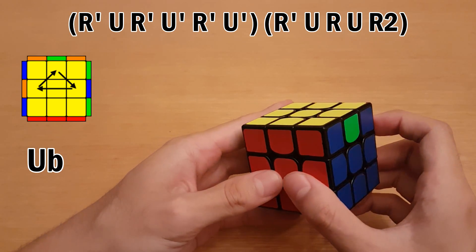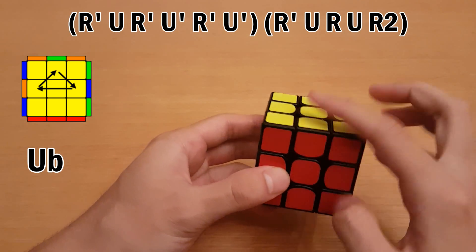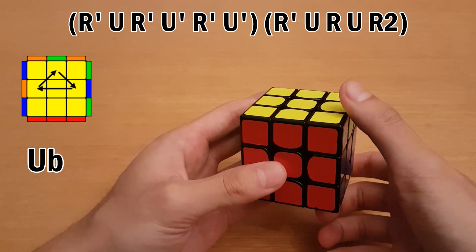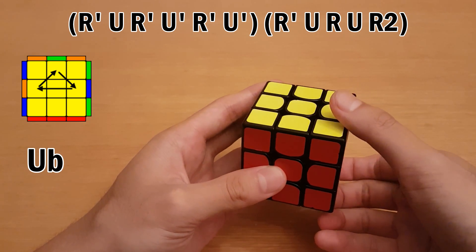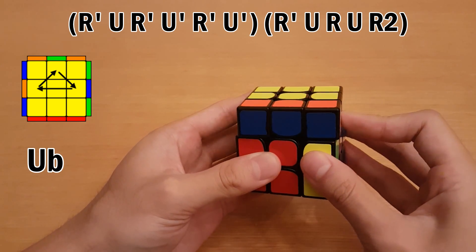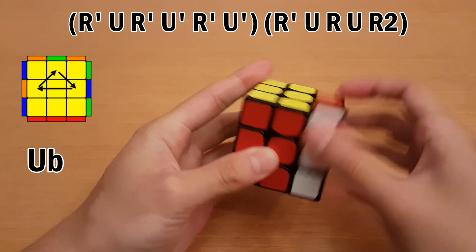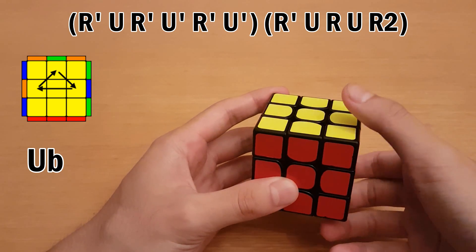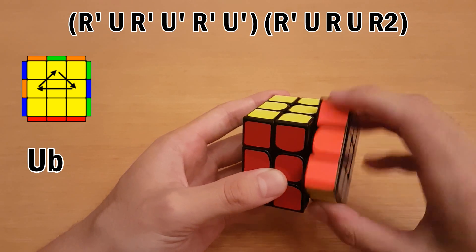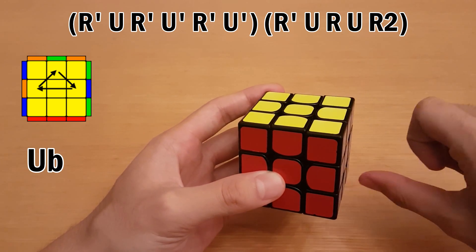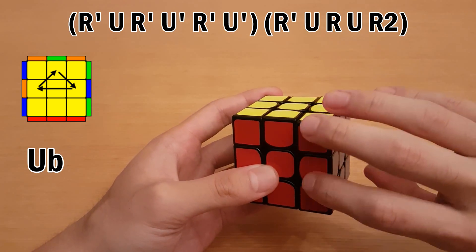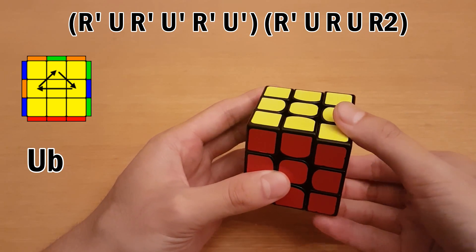Now we have U-b permutation with a block at the front. So this one goes like this. Watch my right thumb as I do this algorithm. It's important that instead of doing full hand R-prime turns, you just push with your thumb at the end, because you won't be able to keep your other fingers on the cube. So again, like this.